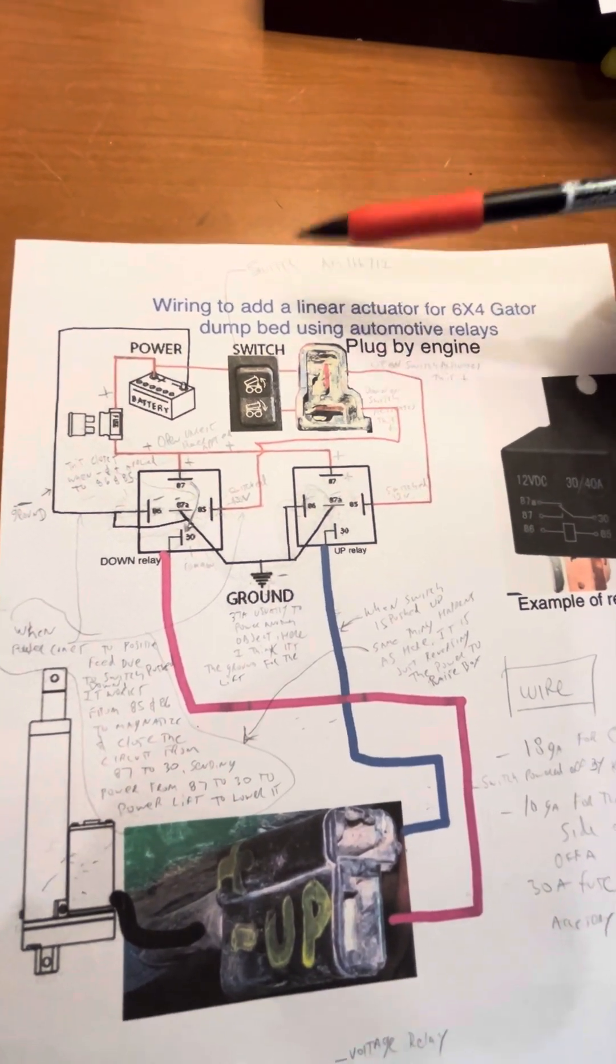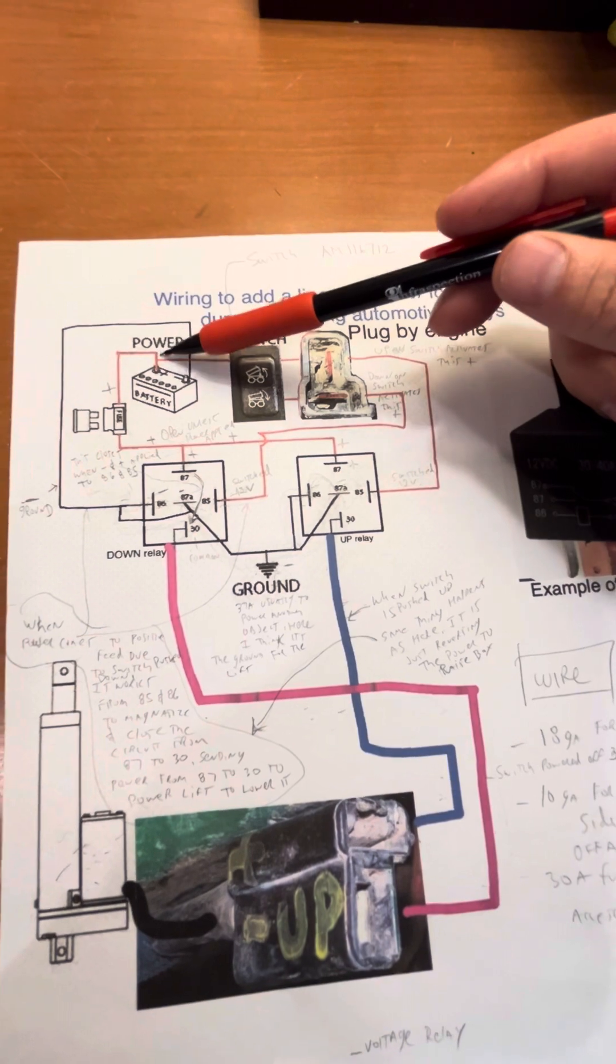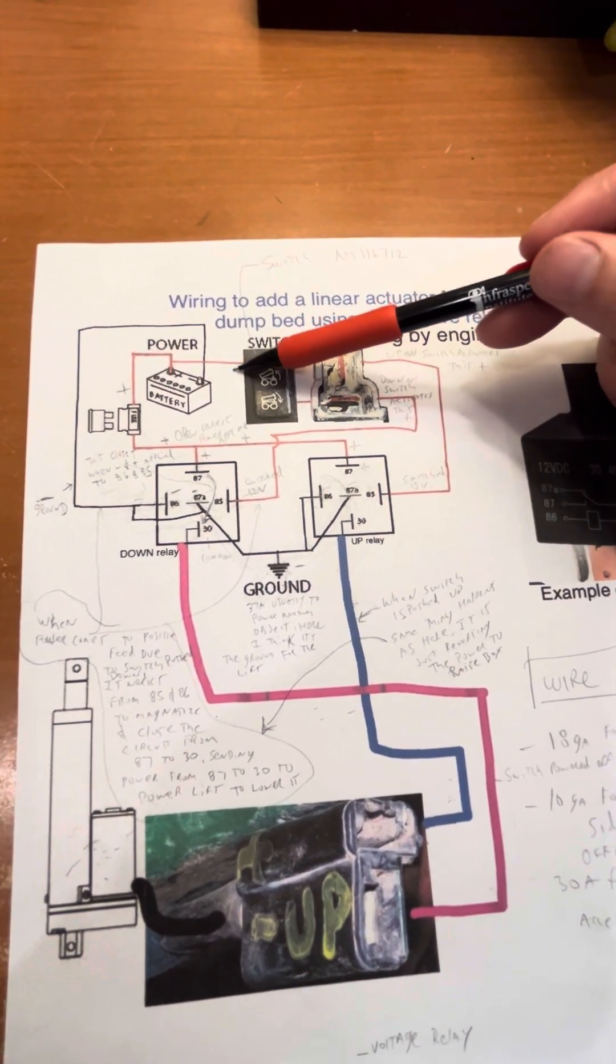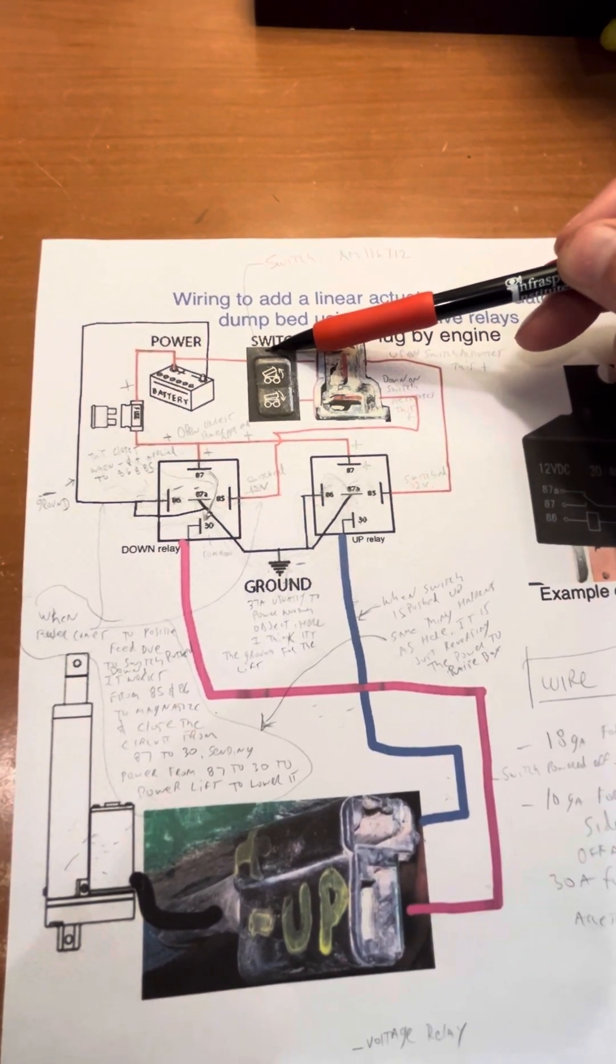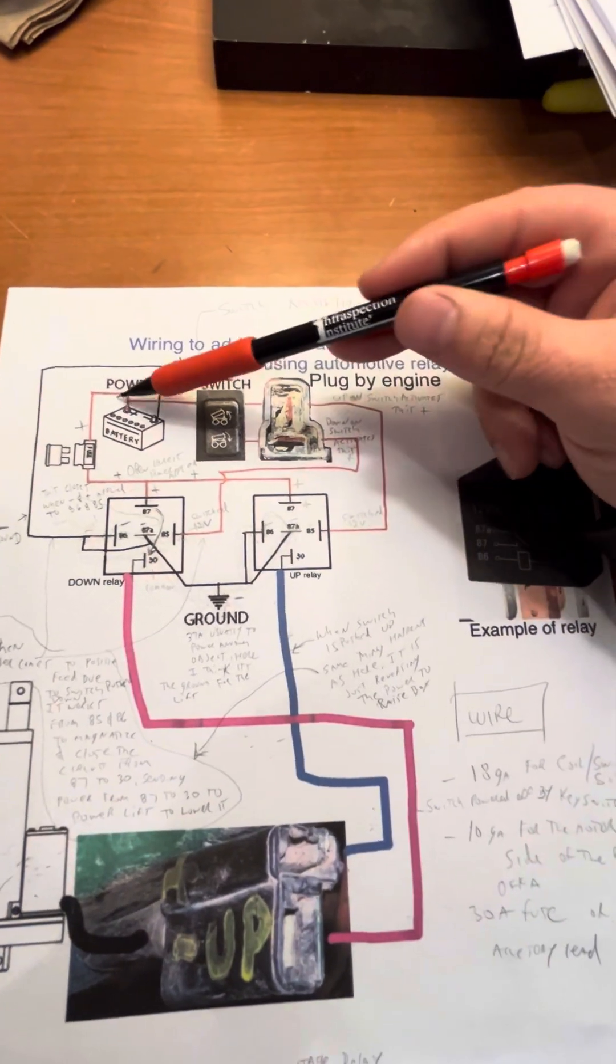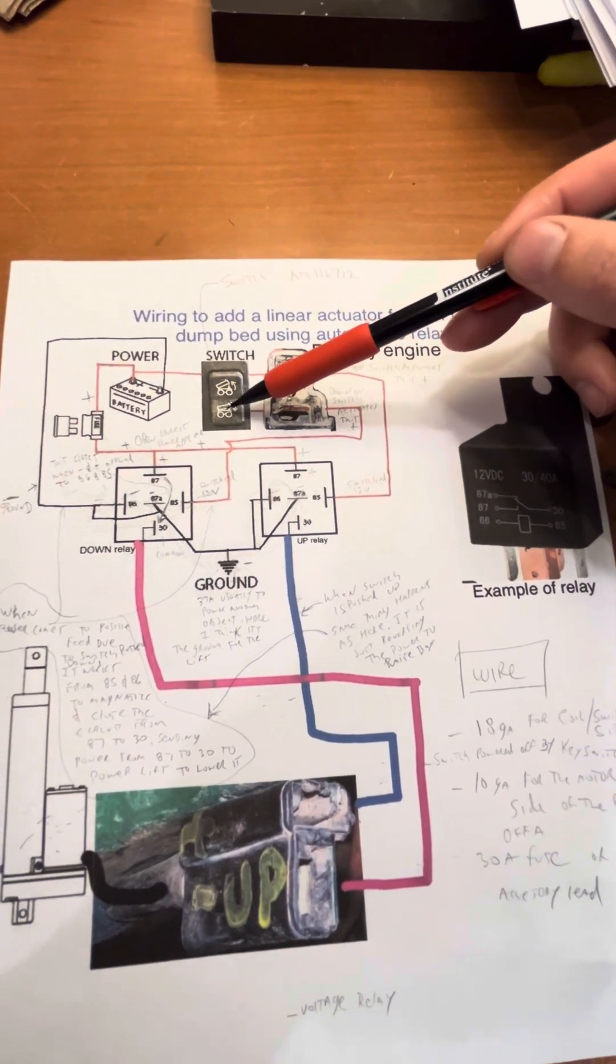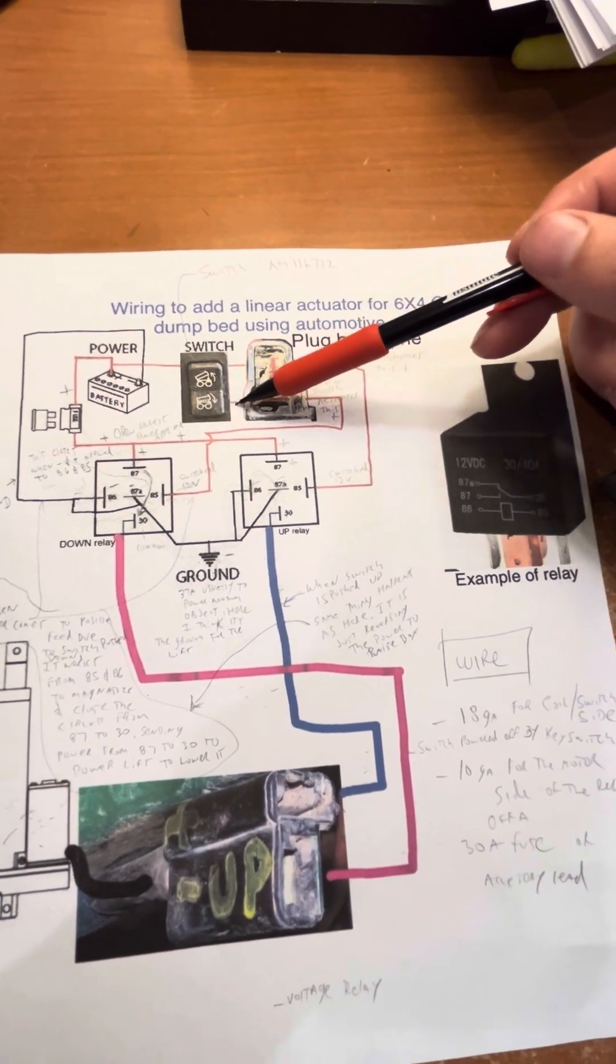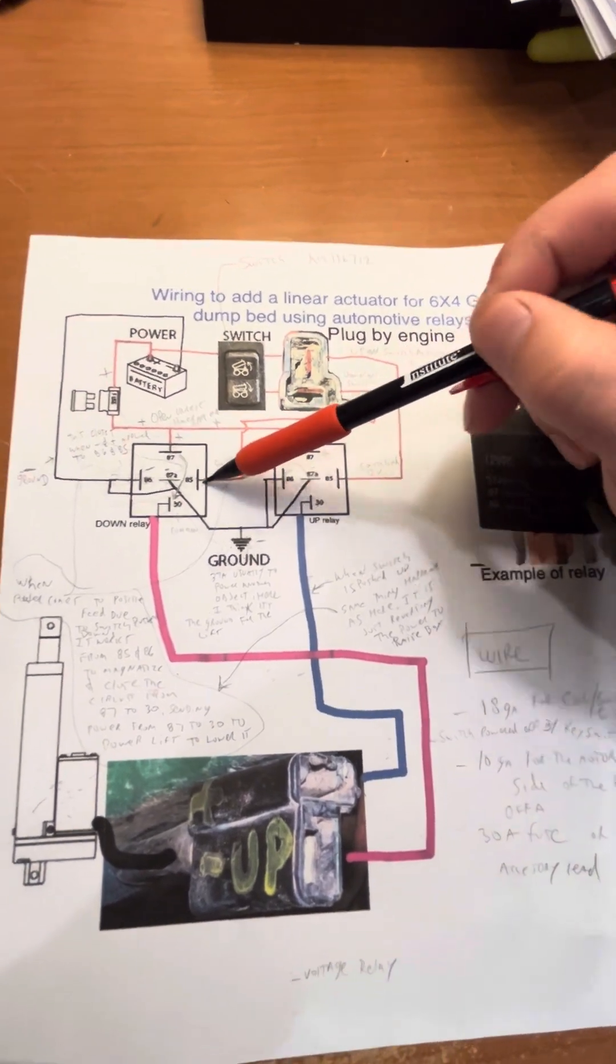So how this works is essentially you have power always hot to the switch. That's typically going to the middle, and then the hot out for up is up here and the hot out for down is down here. But you have power. When you activate the switch, let's say down, this is just a pigtail they have shown. It allows the power to go through here and down to here.